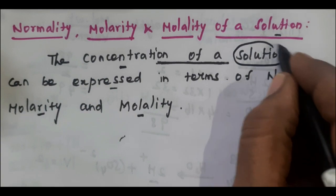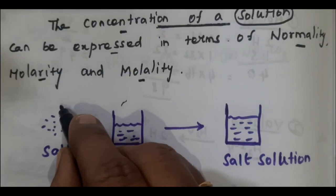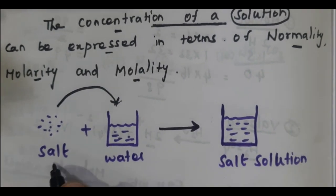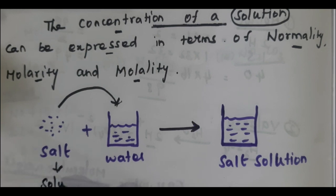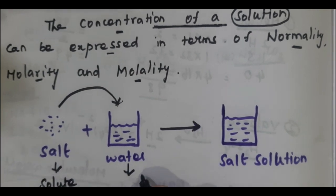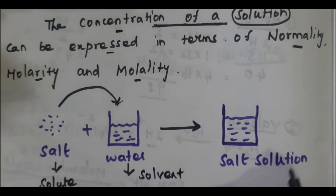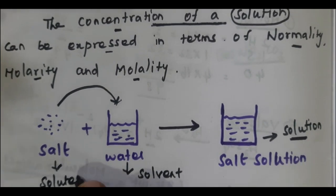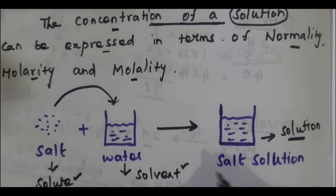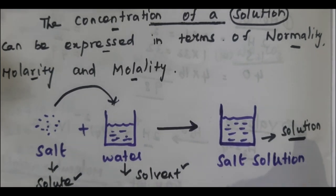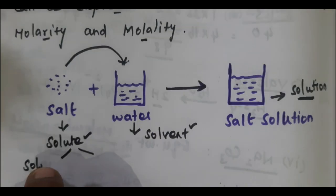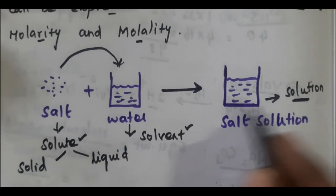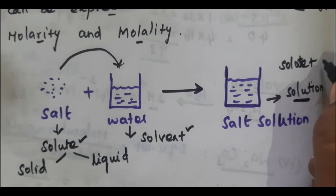First, let us see what is a solution. If you dissolve salt in water, you will get the salt solution. Here, salt is known as solute and water is known as solvent. This is your solution — it contains solute in solvent. Solute plus solvent equals solution. Your solute may be in the form of solid or liquid.